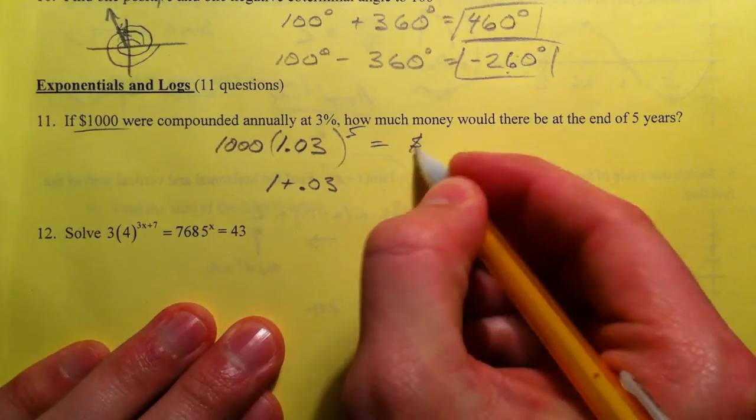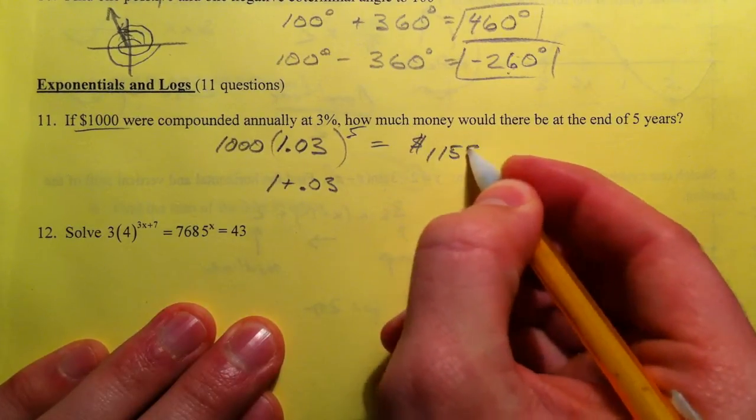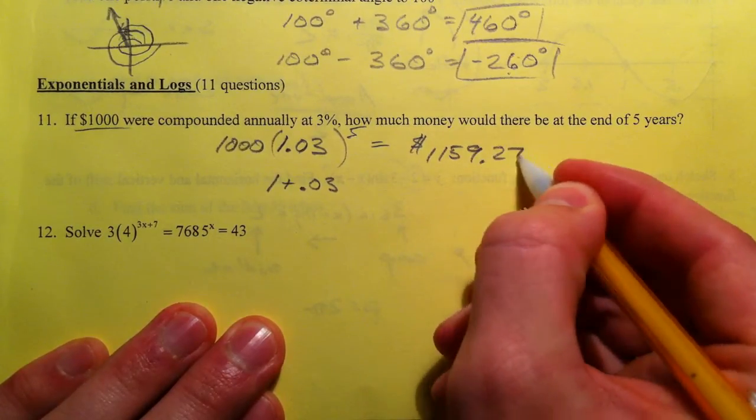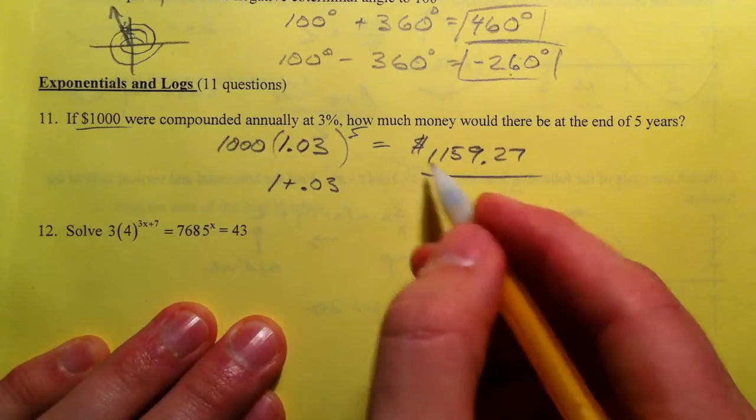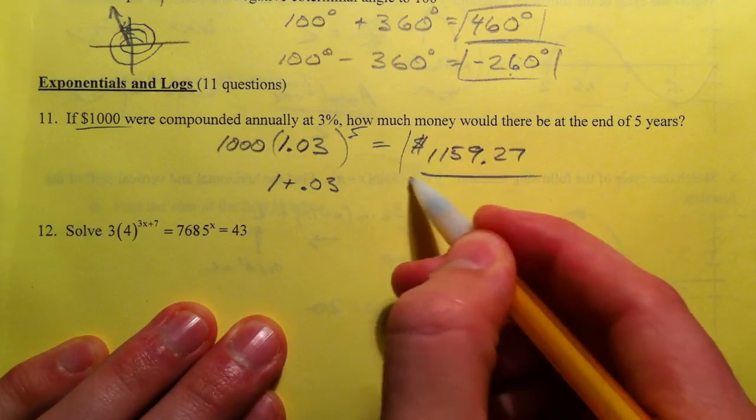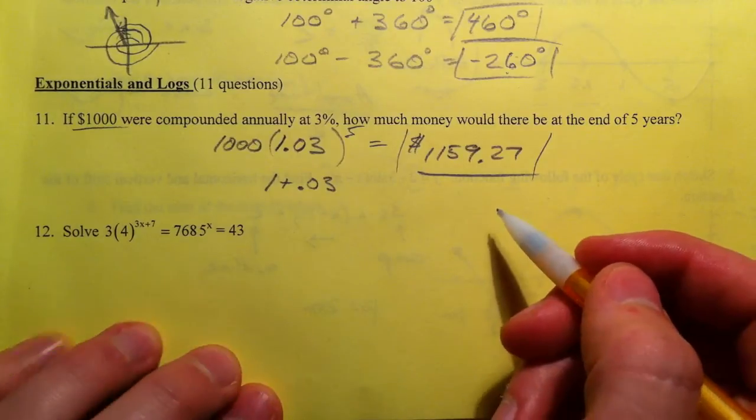We get $1,159.27. So 3% every year gets you $160 in 5 years.